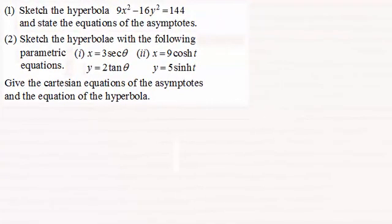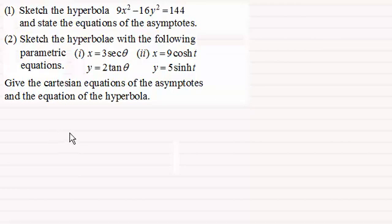Hi there. Now what I've got here is a summary exercise based on the previous video where I introduced you to the Cartesian and parametric forms for the equation of a hyperbola and also discussed the Cartesian form for the equations of the asymptotes.